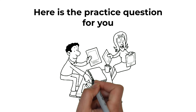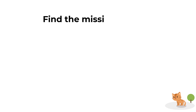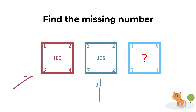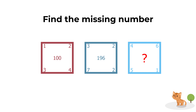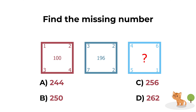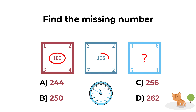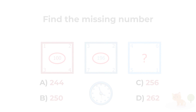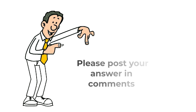Here's a practice problem: three squares each have numbers in the corners and in the middle. The third square has the middle number missing. Choices: A) 244, B) 250, C) 256, D) 262. Hint: what is special about the numbers 100 and 196? Post your answer and solution in the comments.